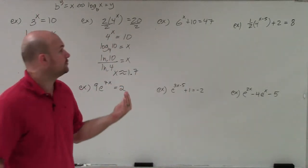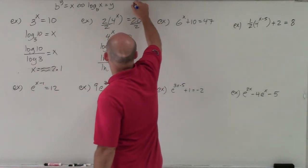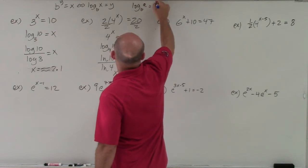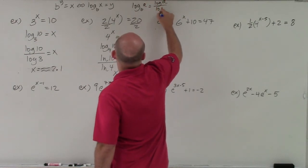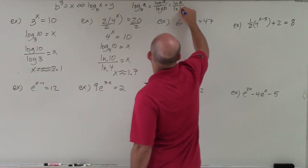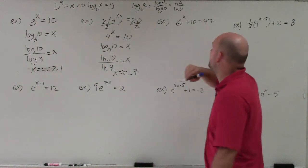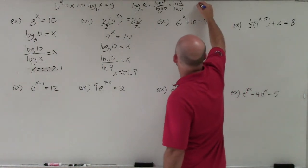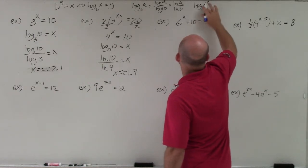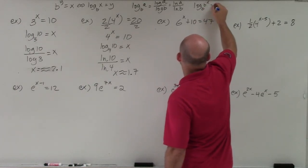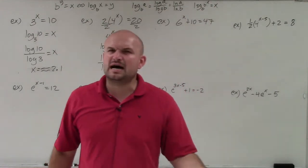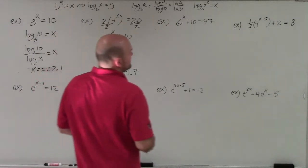There's also another mathematical rule we can use. The change of base formula states: log base B of A equals log of A over log of B, which also equals ln of A over ln of B. So it doesn't matter if you use log or natural log. Another useful form is that log base B of B raised to the x equals x — this is a rule many textbooks like to use, and I'll demonstrate it with the next example.